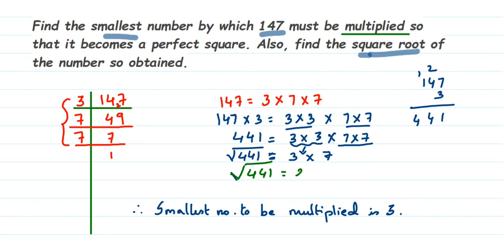So it's very simple: once you've got the prime factors, pair them up, and from each pair take one factor and multiply. That's it. I hope this question is clear. If you have a question or doubt, you can drop a comment. Thank you so much for watching.